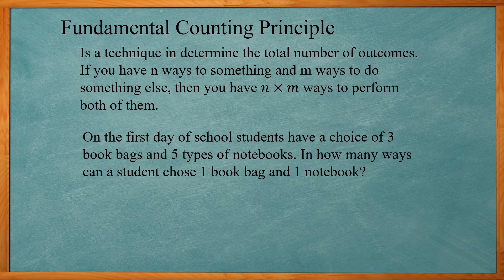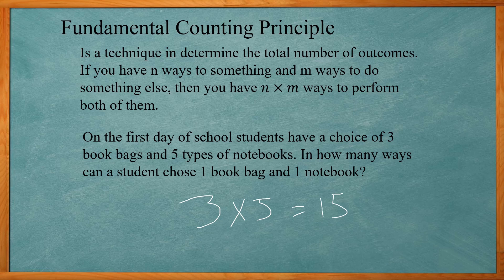The fundamental counting principle is a technique for determining the total number of outcomes. If you have n ways to do something and m ways to do something else, then you have n times m ways to perform both. For example, students have a choice of three book bags and five types of notebooks — there are 3 times 5, or 15 ways to choose one book bag and one notebook. This works for more than two groups: multiply the number of items in each category together.